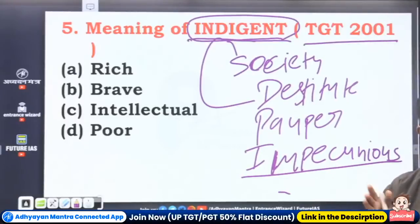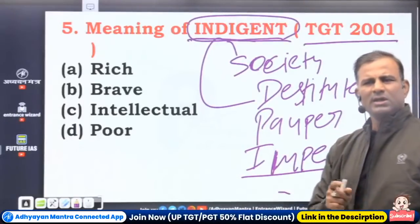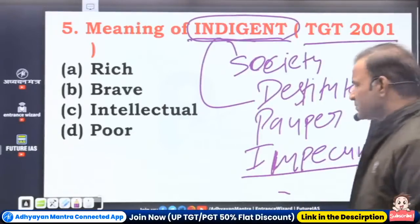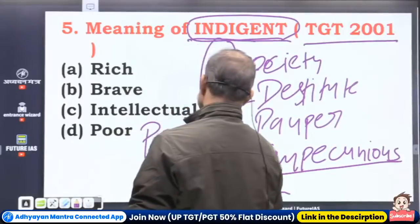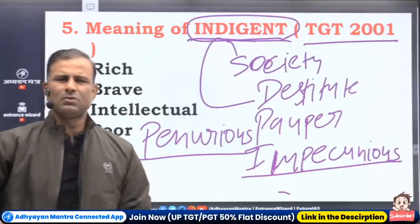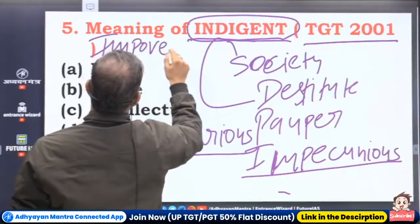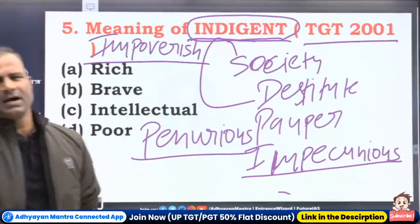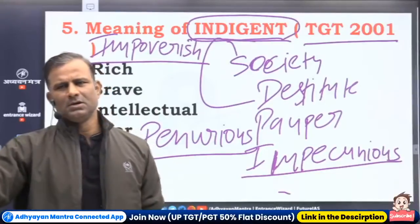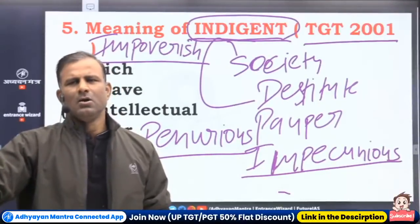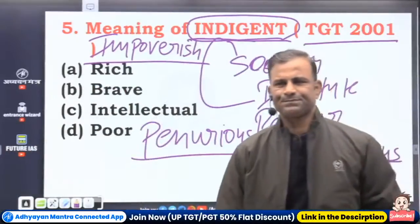More synonyms for indigent: penurious, poverty-stricken, impoverished. Nobody wants to be part of a destitute society — that's why we're working hard for a government job and status. When you write these words, at least 50% stays with you. For 'rich,' you can say affluent, opulent, well-off, well-to-do. Aristocrat and blue-blood refer to people of high social standing.